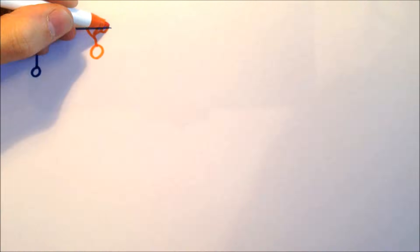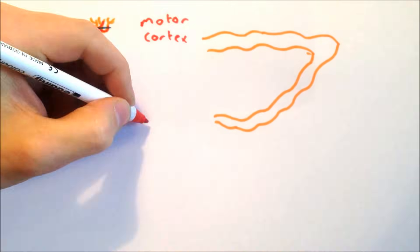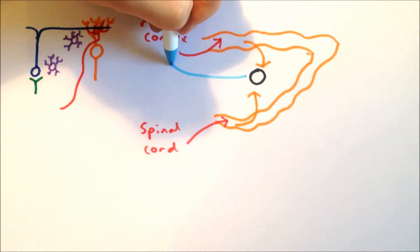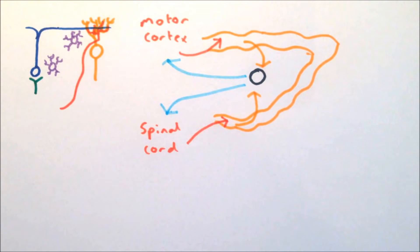In conclusion, the cerebellar cortex is made up of repeating units of the same circuit. It receives information about the body's movements and position in space and projects to the deep cerebellar nuclei, which in turn project back to the motor cortex and spinal cord, allowing the cerebellum to coordinate these areas and produce smooth movements.